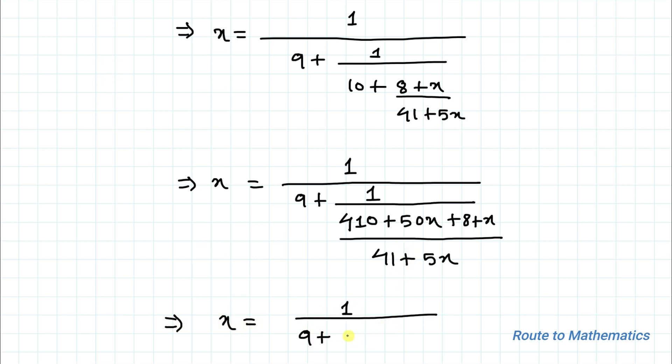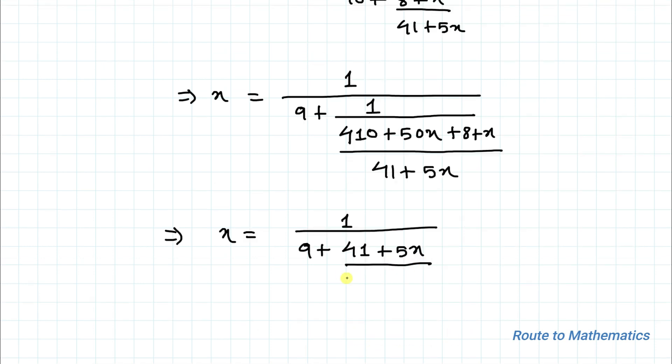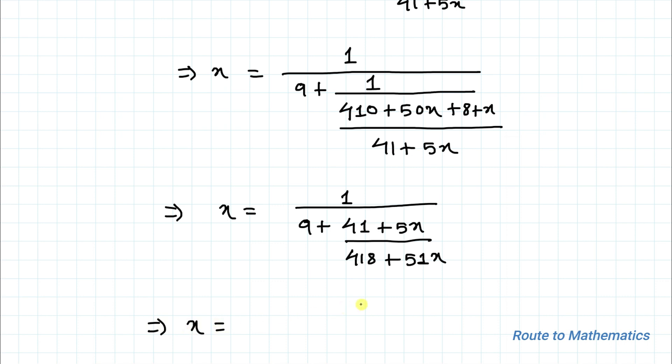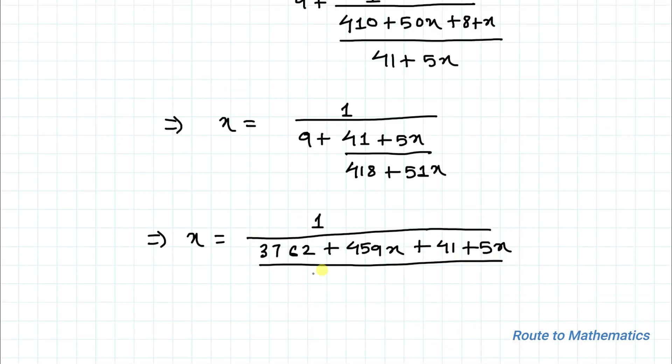This implies x equals to 418 plus 51x divided by 3803 plus 464x. This implies x equals to 1 divided by, again we will take LCM. So, 418 plus 51x multiplied with 9, we have 3762 plus 459x plus 41 plus 5x divided by 418 plus 51x.